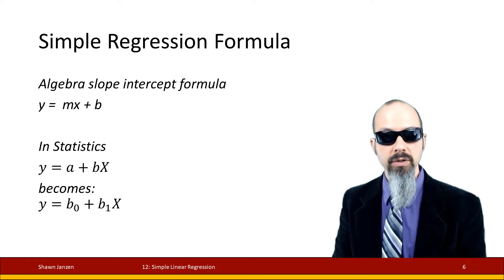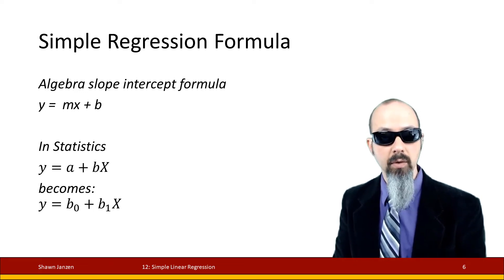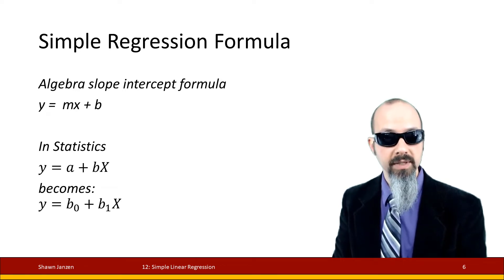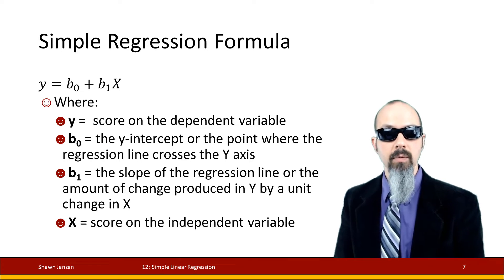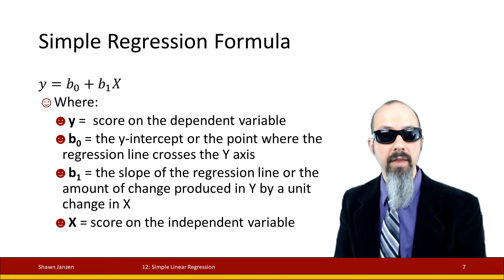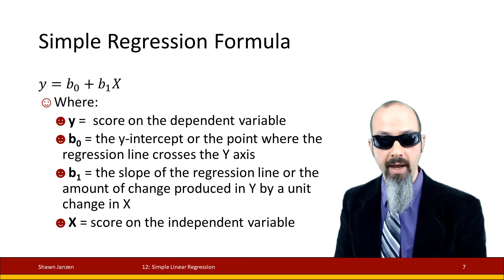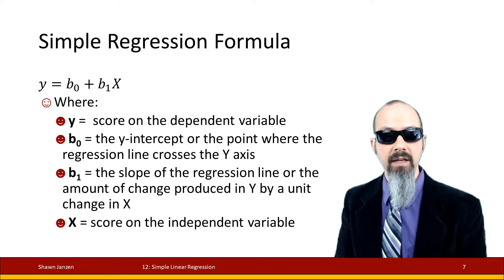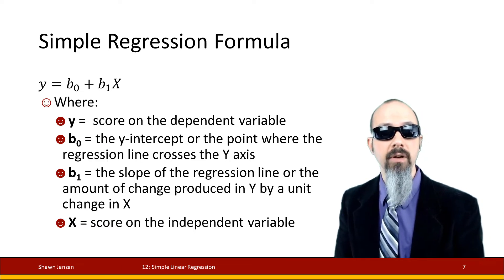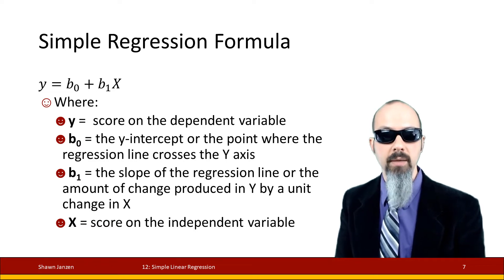More traditionally in statistics, we write it as y equals b0 plus b1 times x. Here, b0 is the value of the y-intercept — where the regression line crosses the y-axis — and b1 is the slope of the regression line. When we move into multiple regression, we add additional b's, each with a different number to distinguish them, and x is your score on the independent variable.